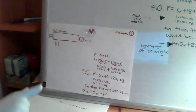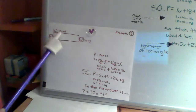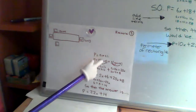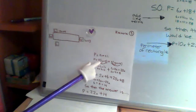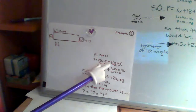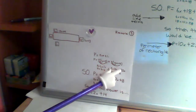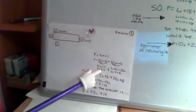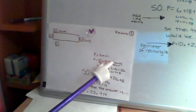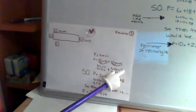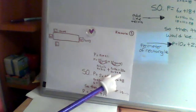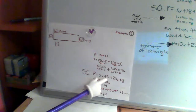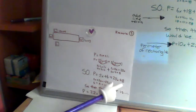My third example: the length is 10X plus 4, and my width is 1X plus 3. So you'd write it out as 2 times (1X plus 3) plus 2 times (10X plus 4). So 2 times 1X is 2X, and 2 times 3 is 6. And then 2 times 10X is 20X, and 2 times 4 is 8. Then you'd add those together, and you'd have 2X plus 6 plus 20X plus 8.